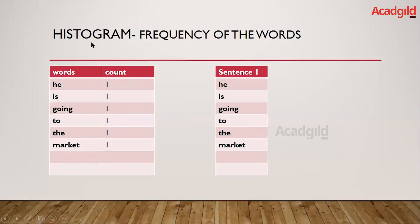The histogram is simply finding the count of words across the whole paragraph from multiple sentences. For sentence one — 'he is going to the market' — we create a table with each word and its count. We take 'he' as a single word and set its count to one, then 'is' to one, and similarly for going, to, the, and market — updating the count for all words in sentence one.